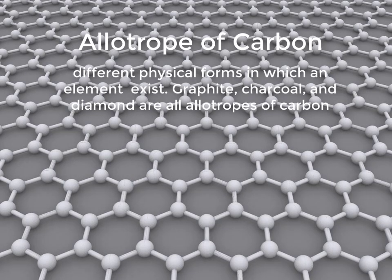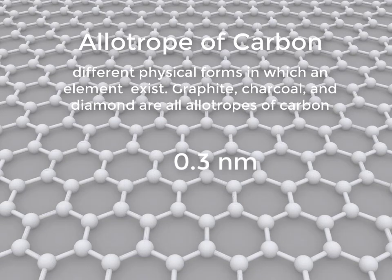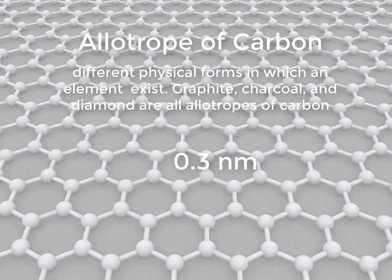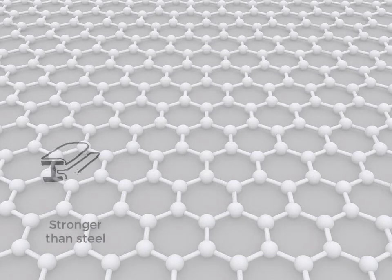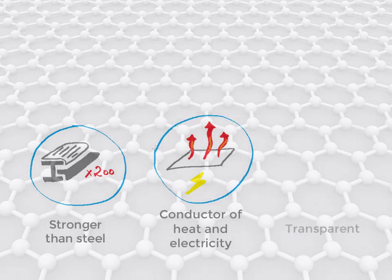Graphene is an allotrope of carbon with many astonishing properties. It's like a sheet of paper with thickness of just 0.3 nanometers. It is about 200 times stronger than the strongest steel, effectively conducts heat and electricity, and is nearly transparent.